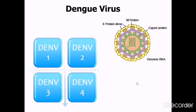Dengue Virus is an Arbovirus, defined as any virus that is transmitted through arthropods such as mosquitoes and ticks. It belongs to the Flaviviridae family. It is single-stranded RNA with a capsid protein and an outer envelope, making it an RNA envelope virus. It has four serotypes: one, two, three, and four.